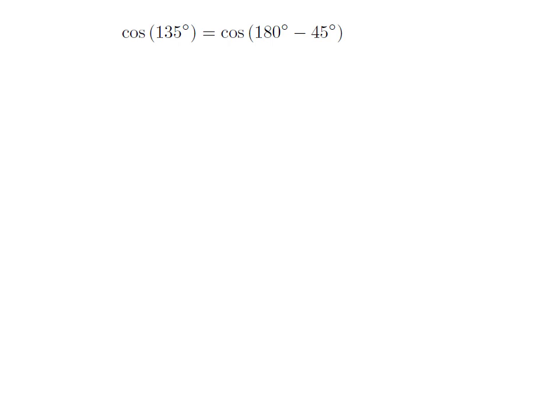As 135 degrees is equal to 180 degrees minus 45 degrees, so cosine of 135 degrees is equal to cosine of 180 degrees minus 45 degrees.